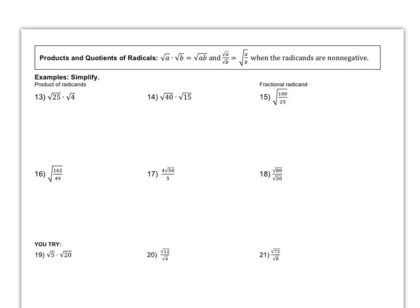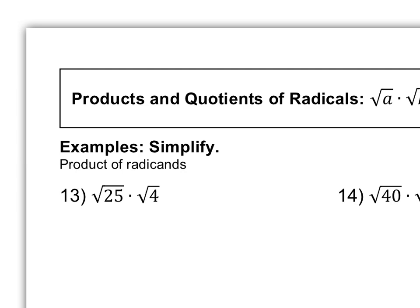Now let's look at some examples on the note sheet. The first example is the square root of 25 times the square root of 4. This is a case that it does not matter if you choose to keep them separate or together. If I keep them separate, I know that the square root of 25 is 5 and the square root of 4 is 2, so their product is 10. If I had chosen to multiply them together, I would have gotten the square root of 100, which is also 10.